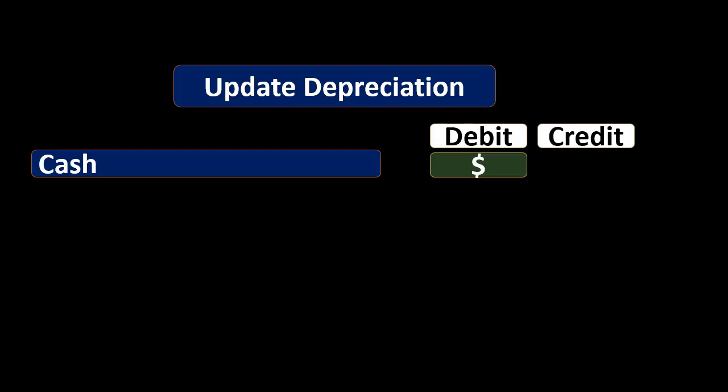When you construct the journal entry, the first thing we typically ask is: is cash affected? Did we get any cash for the disposal? We may or may not get cash. In our example here we're going to start off with an example where we don't get cash, but we want to go through the same steps whether we get cash or not, so it will work for any type of disposal transaction. If we get cash, then cash would be debited by whatever we receive.